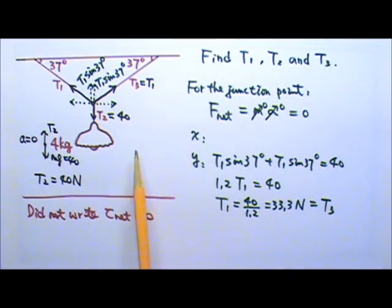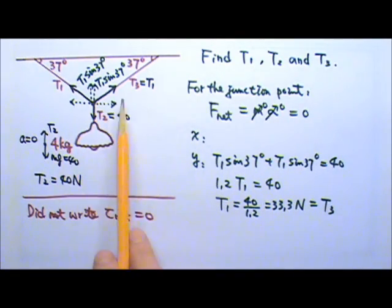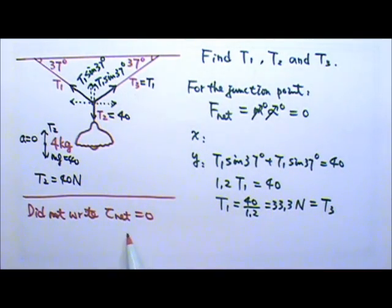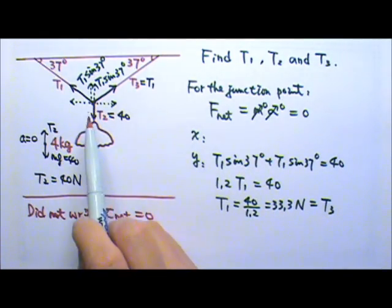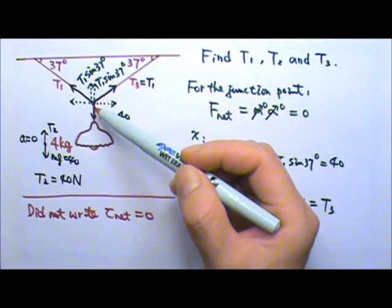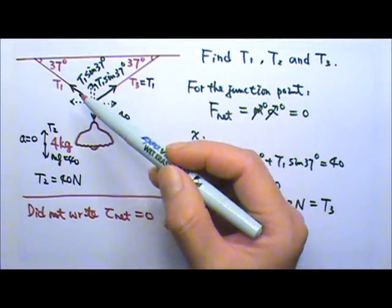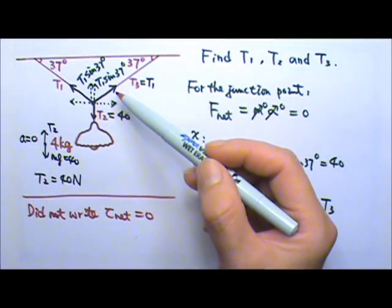In this particular case, due to the symmetry left and right, the x-direction just tells us that T1 and T3 are equal. We did not need to write any torque equation. Also, because the most obvious choice for a pretend fulcrum is at the junction point, and all three forces go through the junction point, none of these tensions produce any torque.